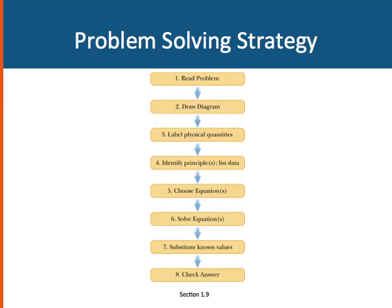The last thing I want to talk about in today's lecture is problem solving. Let's go through the strategy that the book gives. In order to solve problems in physics, first thing we want to do is read the problem. Then we're going to draw a diagram. We're going to label all of our physical quantities, identify the principles and list all of our data, choose some equations, and solve those equations. We're going to solve them algebraically, substitute our known values, and then check the answers.